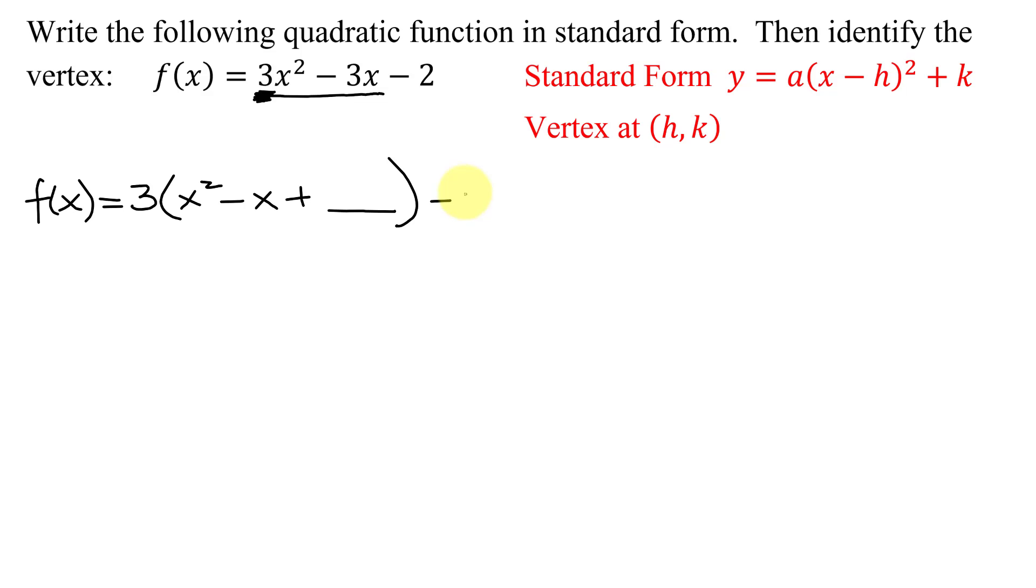Because I need to add something in here that turns this expression into a perfect square trinomial. But now don't forget, I have to bring down the -2. And if I've added something here, I'm also going to have to add its opposite here. So the net change on this expression is 0.